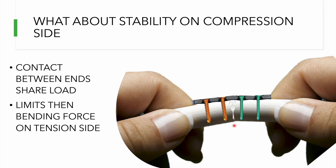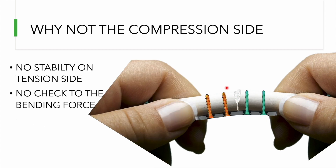This is the tension band principle, and it applies irrespective of the device placed on the tensile surface. The condition is that the compression side must achieve contact whenever a bending force is applied, thereby limiting the bending force on the tension side.